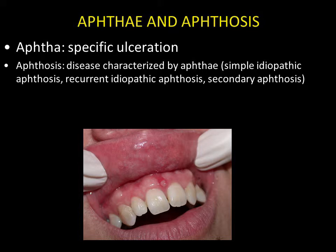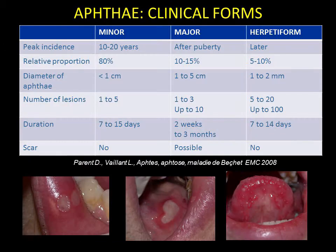The disease characterised by the presence of aphthae is aphthosis. It may be simple or complex depending on lesion severity and the number of recurrences. Three clinical forms of aphthae are distinguished.